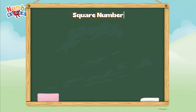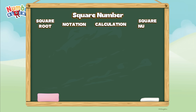Let's check out square numbers. Here is the square root, the notation, the calculation, and the square number. Let's start with one. The notation is one square. The calculation is one times one, and the square number is one. Let's try two. Two square, or two times two, is equals four.